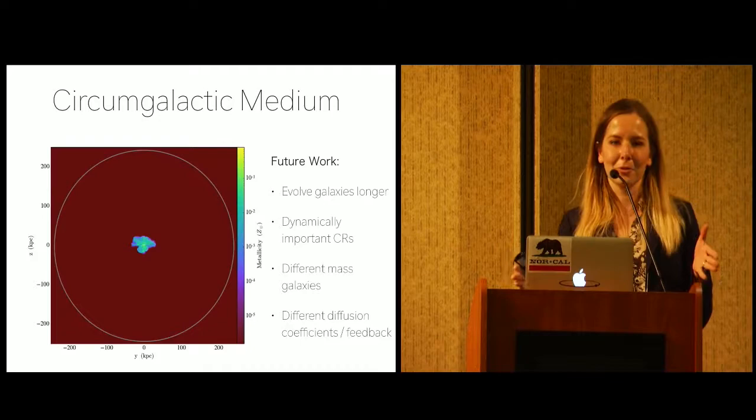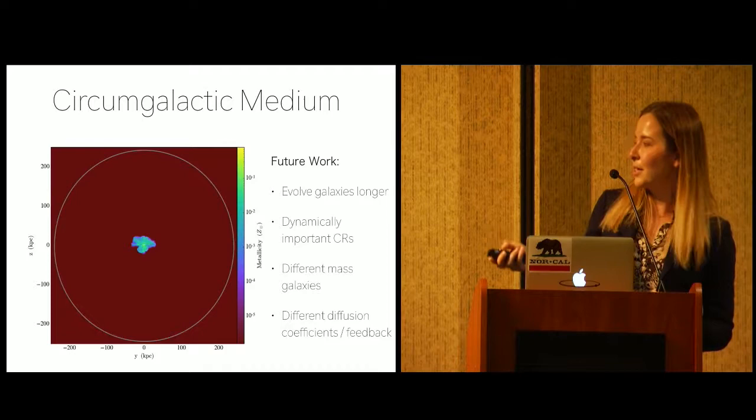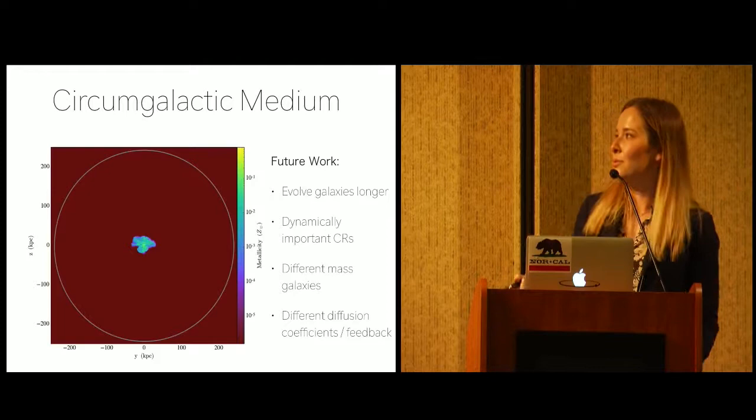But this is just the tip of the iceberg. So, in the previous slide, I conveniently chose a box of 70 kiloparsecs because the galaxy was young and it was nice to make the outflows look really big. But really, the CGM extends out to the virial radius. And so, step one for future work would be evolve the galaxies longer, like give them the time to enrich the CGM.